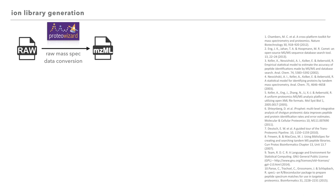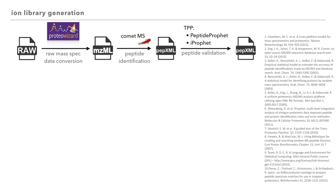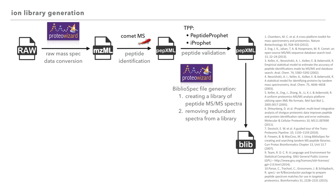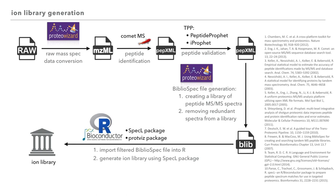We took raw files, converted them to mzML using ProteoWizard, followed by peptide identification via the COMET search engine. Search results were processed in the TPP for peptide validation. The resulting file was further processed in ProteoWizard with an FDR below 1% to generate a non-redundant BiblioSpec file. The Blib file was then used to build the ion library in R using the spec-l package. This workflow can now be shortcut via the Biognosis generic file available in recent Spectronaut releases.